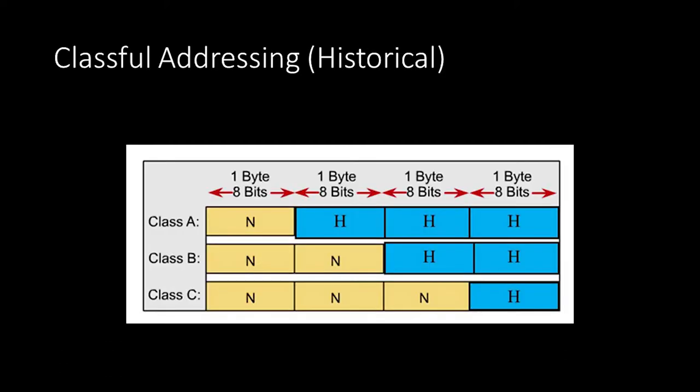This next section is historical, so we don't really use this nowadays, but it helps us understand the IPv4 exhaustion problem better. Originally, these network addresses were divided into network and host portions at every 8 bits, or 1 octet, creating three classes of addresses. Class A networks, identified with a first octet in the range of 0 to 126, had 1 octet for its network portion and 3 octets for the host portion. This allowed for 2 to the 24 minus 2, or roughly 16 million devices per network.